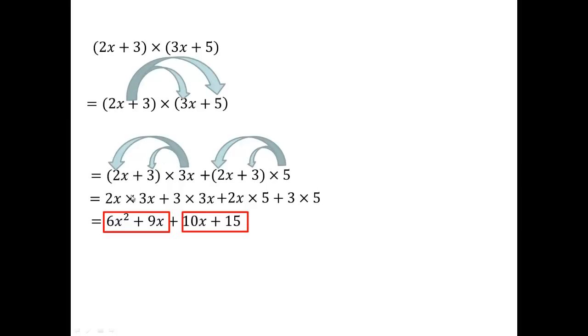Term by term multiplication. 2x times 3x. 2 times 3 is the 6. And x times x is the x squared. And you keep going down the line. So add like terms together. And then write the final answer.